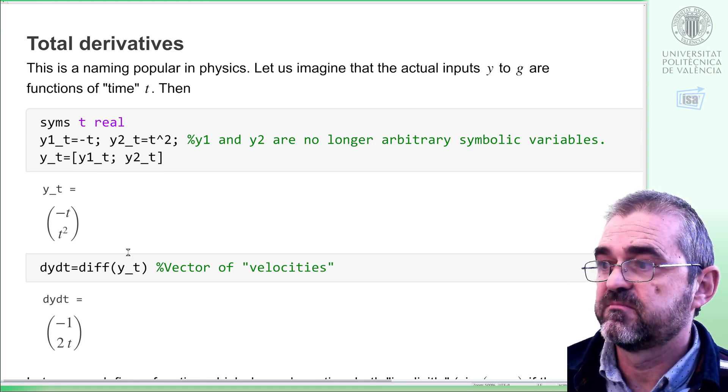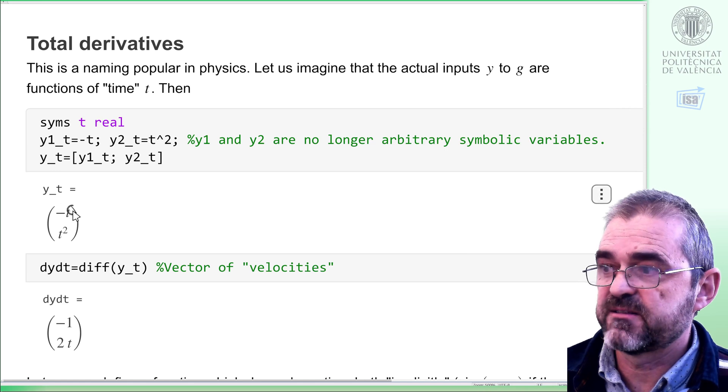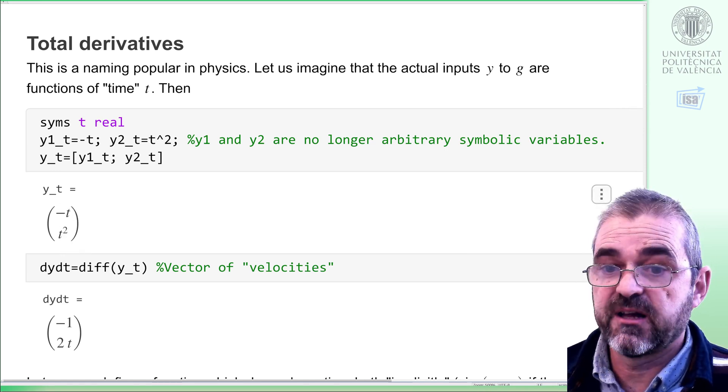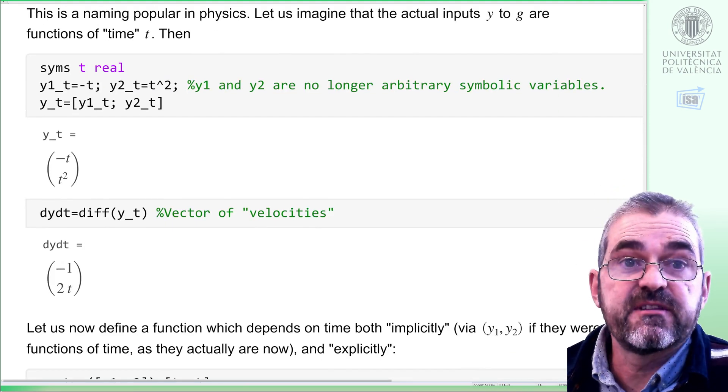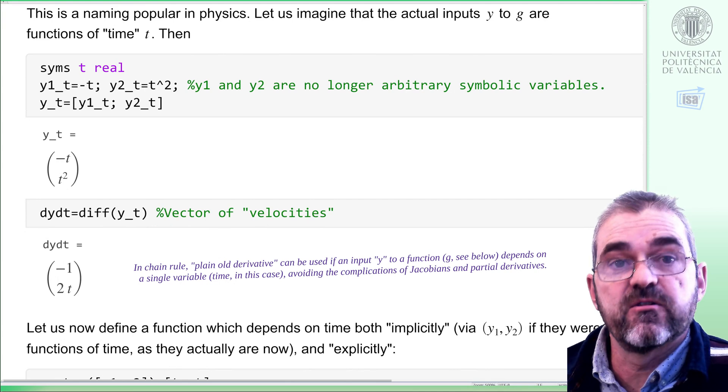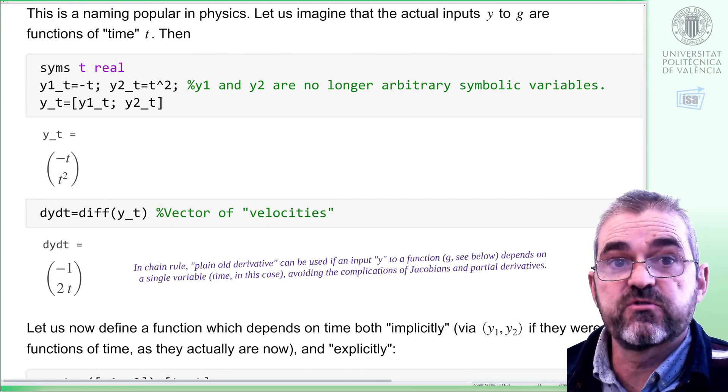So, I will know that y of t, the two inputs, are minus t and t squared, and later on, its time derivative depends on only one argument, so it's diff, no need of Jacobian. It's minus 1 and 2 times t.